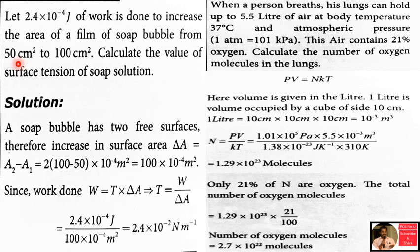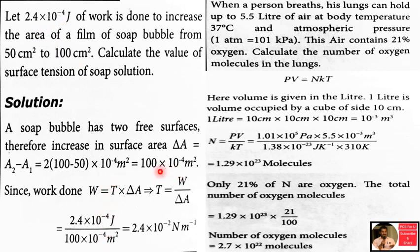Using cm² equals 10 power minus 4 m², the increase in area is (100 minus 50) into 10 power minus 4 m², which is 50 into 10 power minus 4 m². Accounting for two surfaces and applying the work-energy relation gives the coefficient of surface tension as approximately 10 power minus 2 N/m.